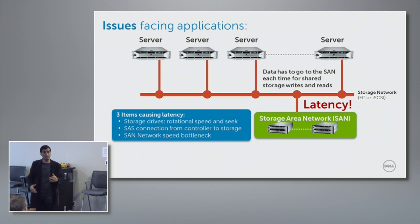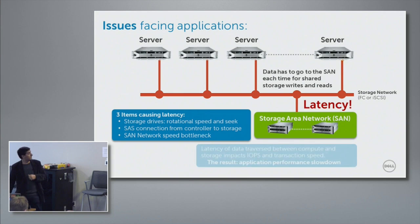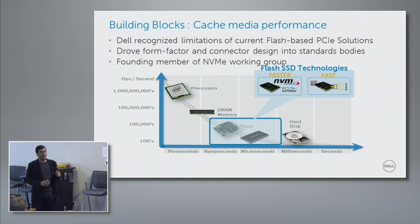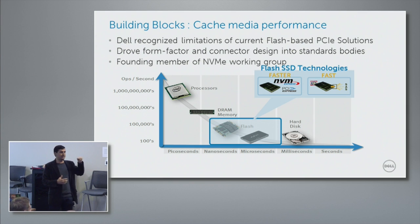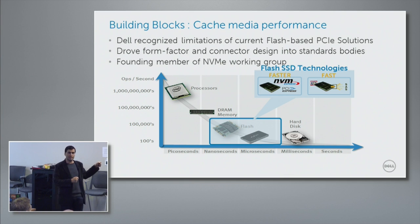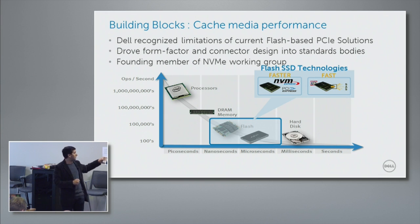That's the problem — all three of those latency factors are what we're trying to solve with Fluid Cache. One way to solve this is to cache the most actively used data closer to compute. So what cache medium do you use? Before going into Fluid Cache itself, data can be cached in many different mediums.